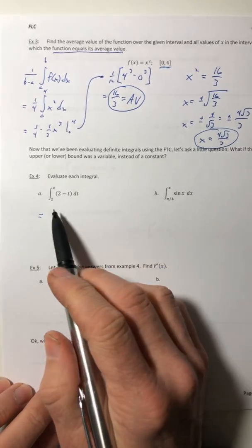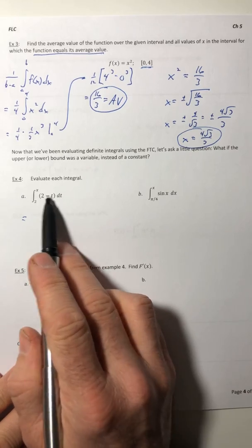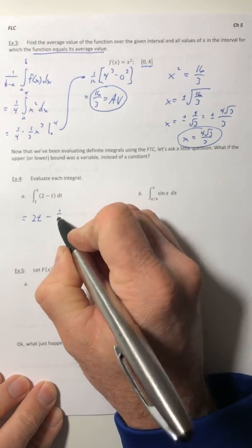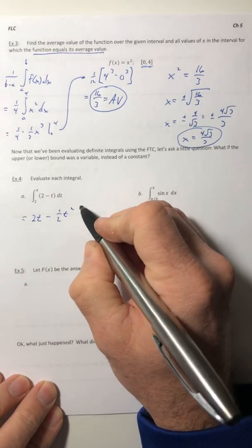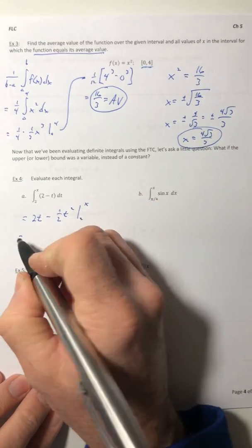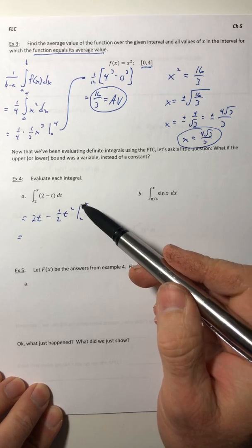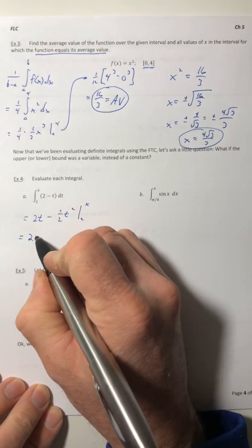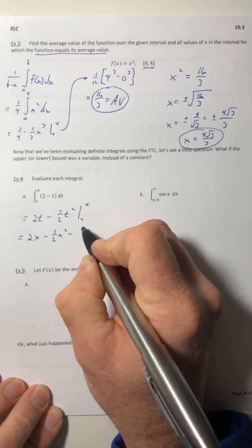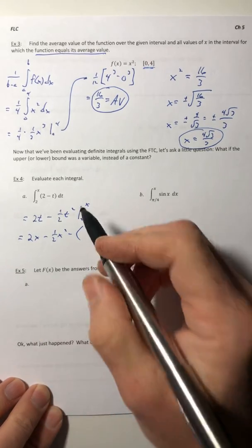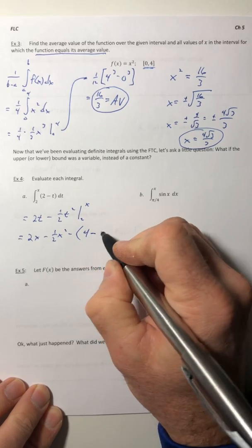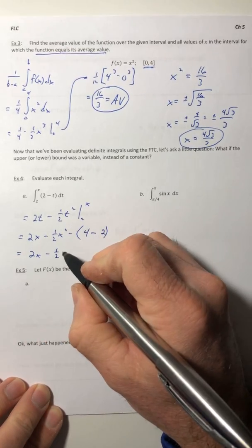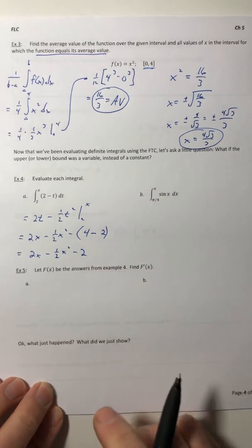Well, let's see what happens if we do that. So let's integrate 2 minus t dt. That would be 2t minus 1/2 t squared going from 2 to x. So we're going to do the same thing. We don't do anything different because this is a variable. You still need to plug it in. So 2x minus 1/2 x squared. And then minus, now plug in the 2. So 4 minus 2. And we end up with 2x minus 1/2 x squared minus 2.